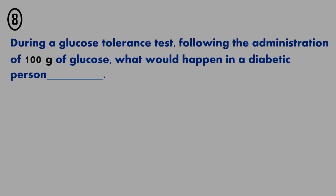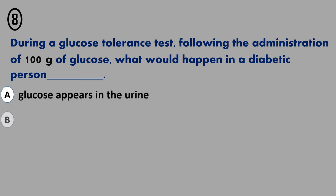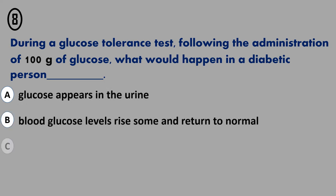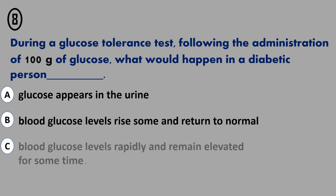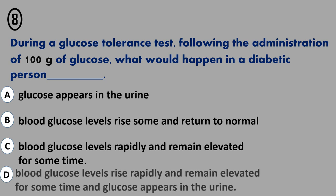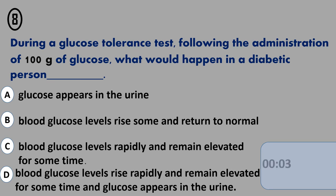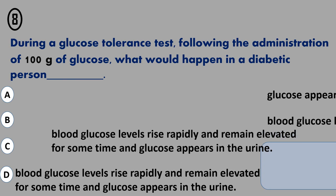Question 8. A. Glucose appears in the urine. B. Blood glucose levels rise some and return to normal. C. Blood glucose levels rise rapidly and remain elevated for some time. D. Blood glucose levels rise rapidly and remain elevated for some time and glucose appears in the urine. The correct answer is...